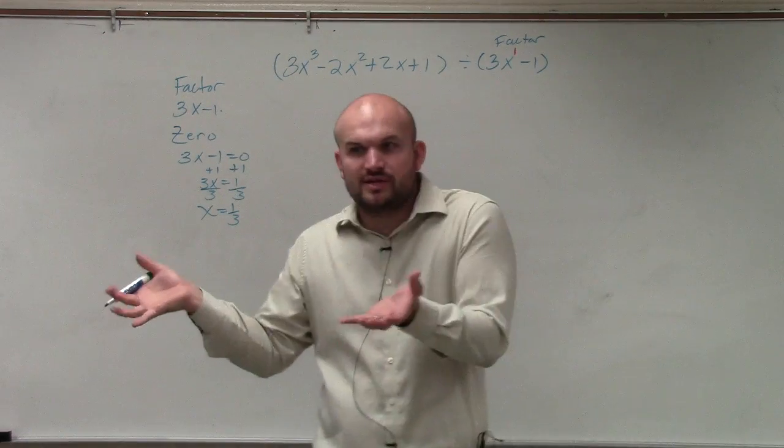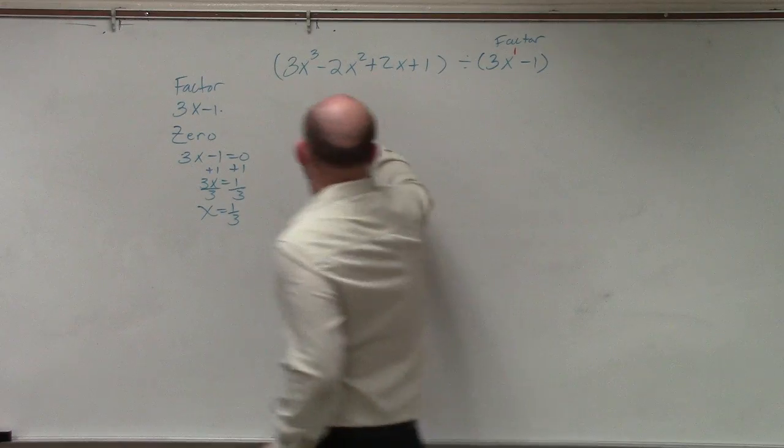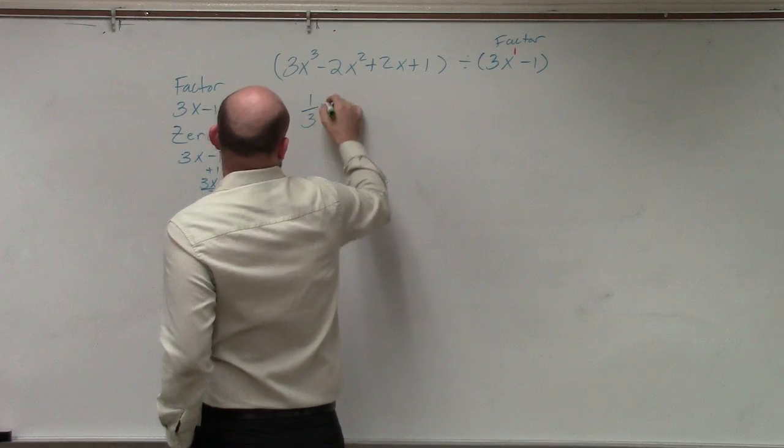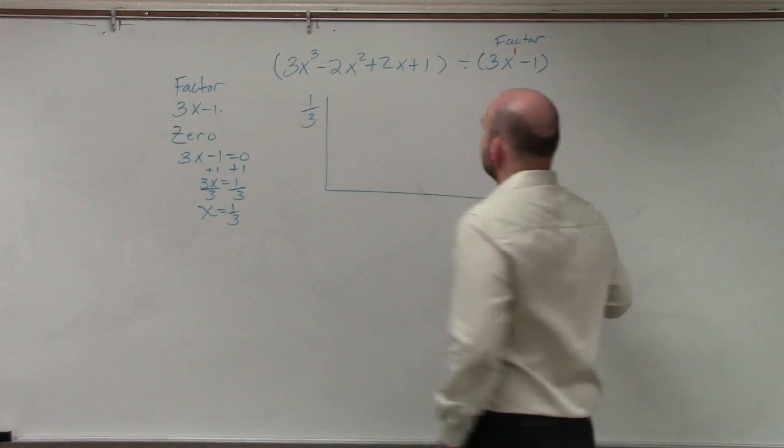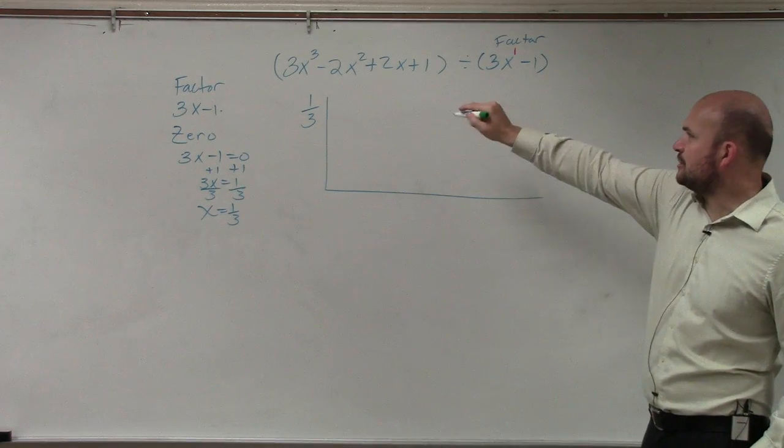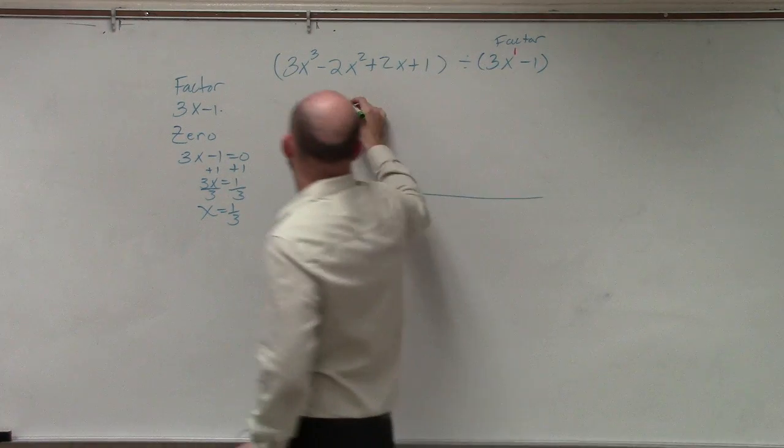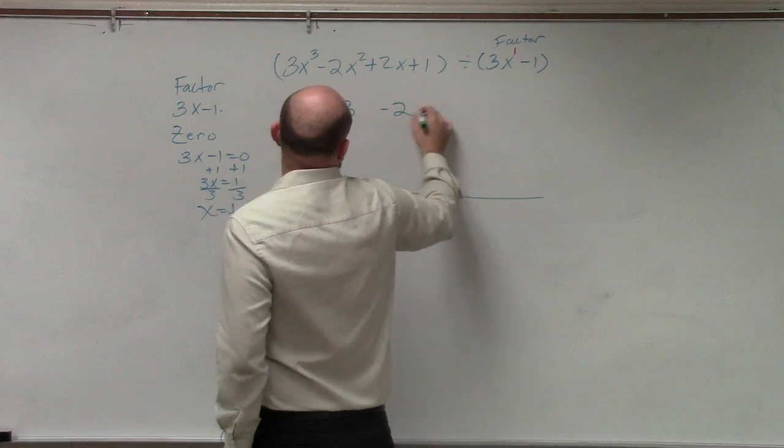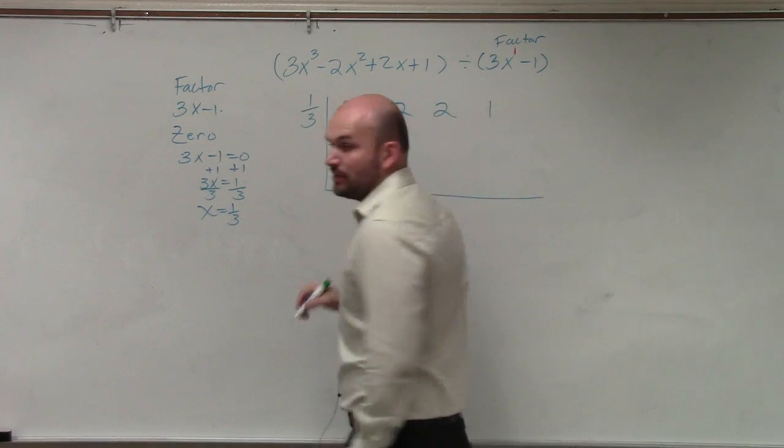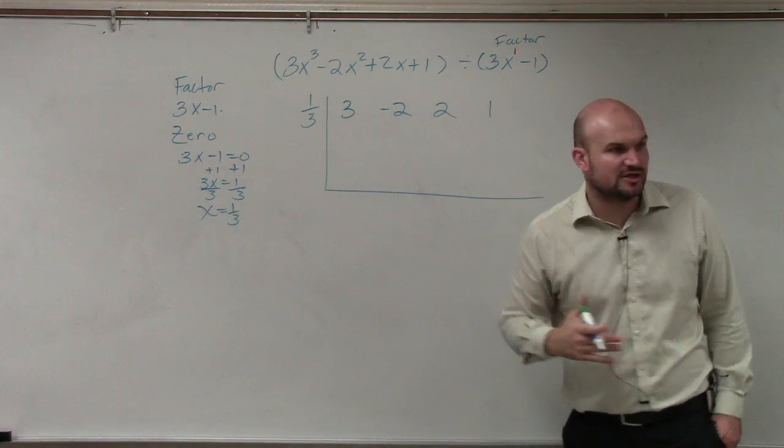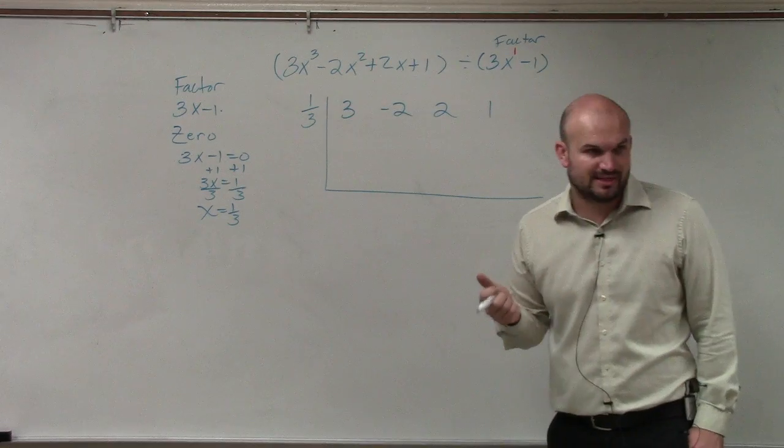So now I take 1 third and make myself a nice little box. And then I take the coefficients. I have 3, 2, 2, or 3, negative 2. And I have everything in standard form, correct? So I don't need to include any zeros for any missing powers. We're good with that?